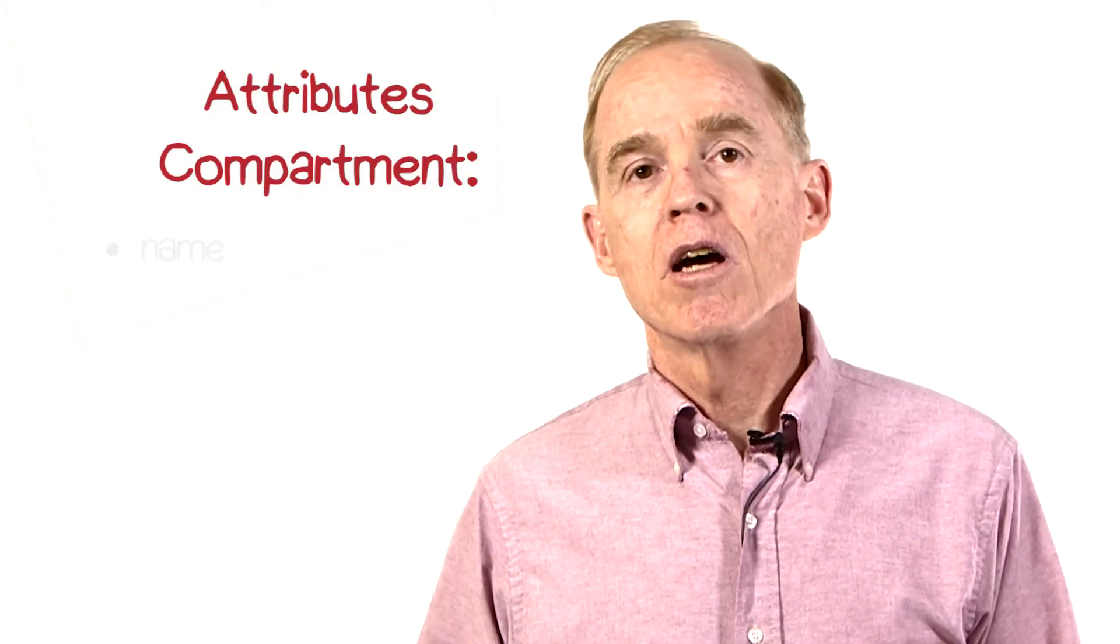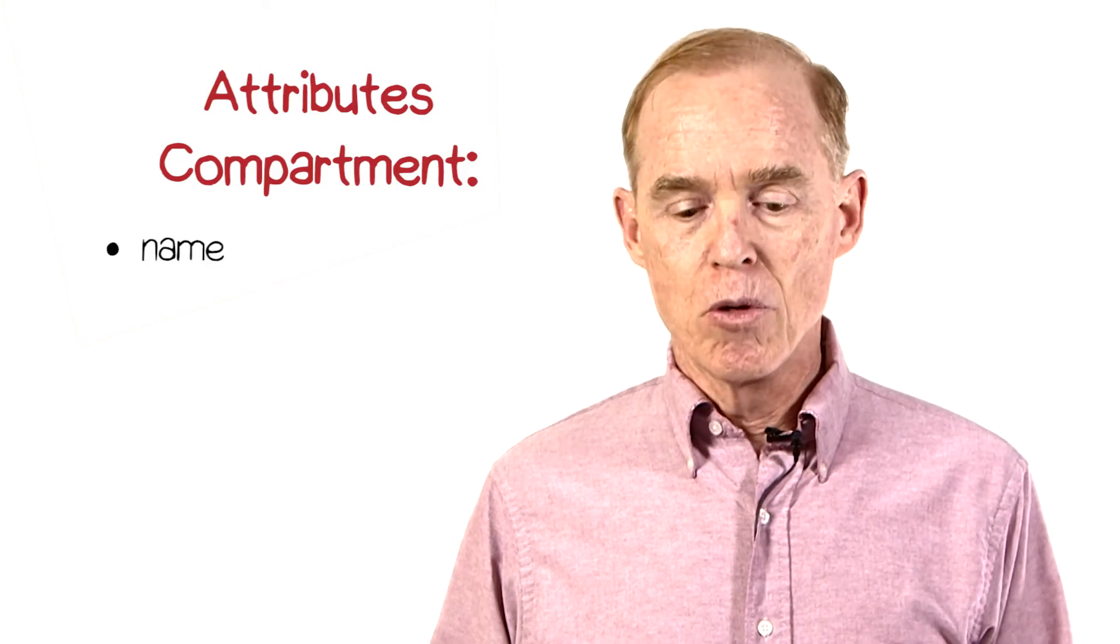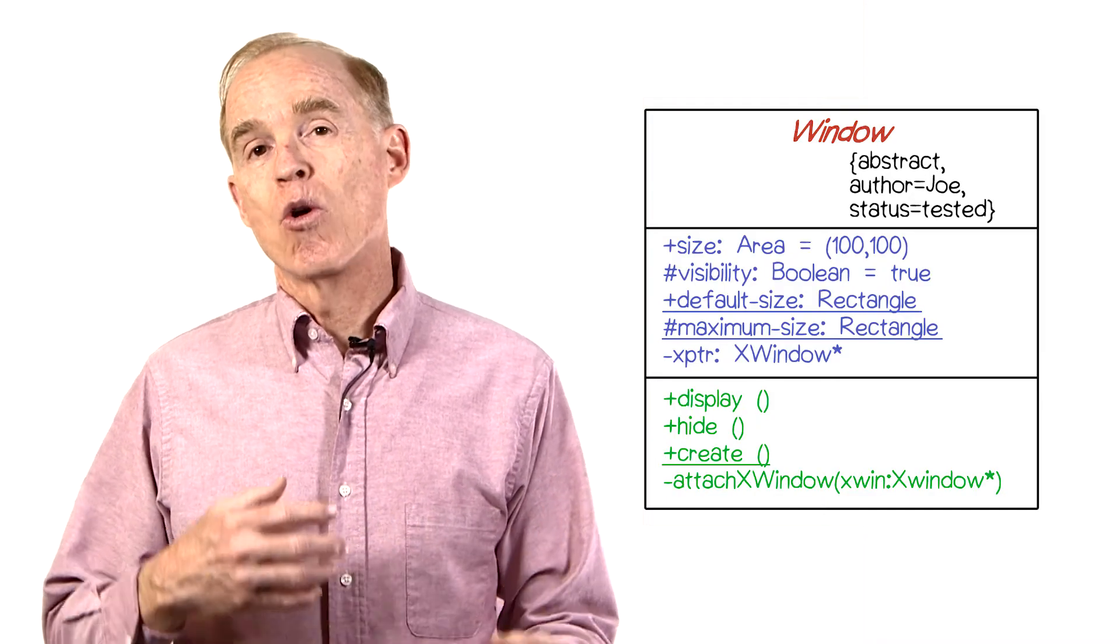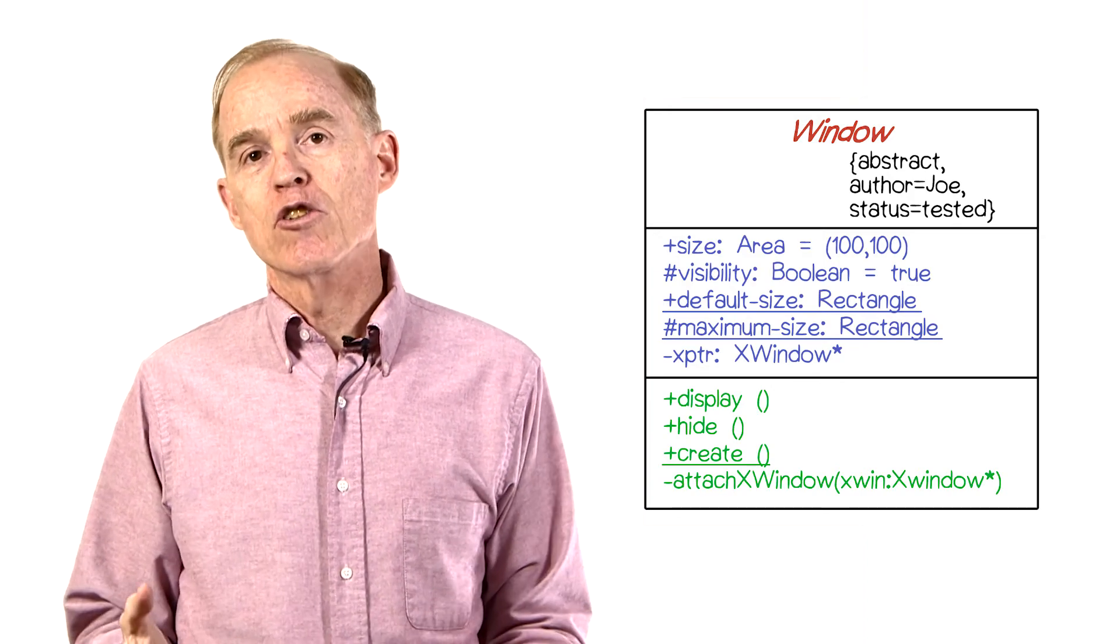In addition to the visibility, of course you must have the name of the attribute. You can indicate the multiplicity and ordering of the attribute. Now they're not shown in this example,